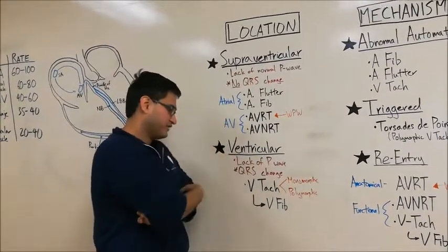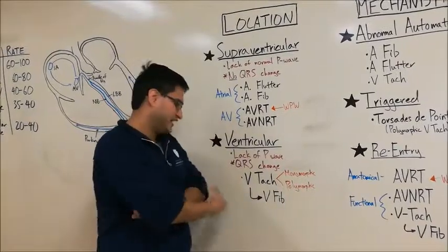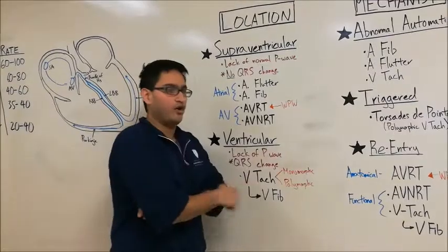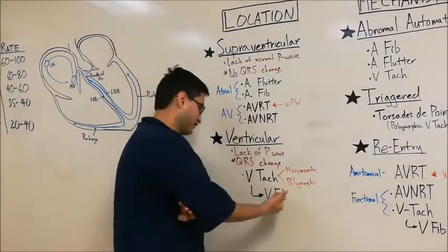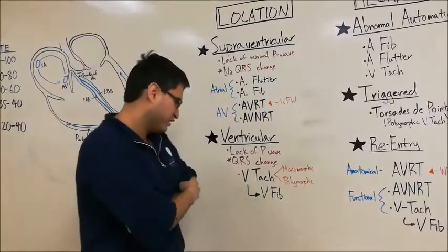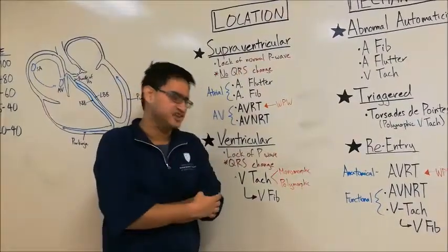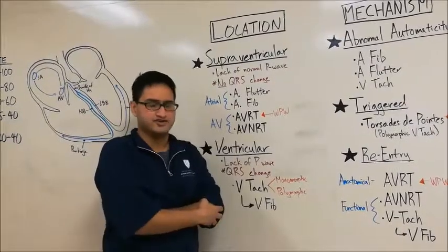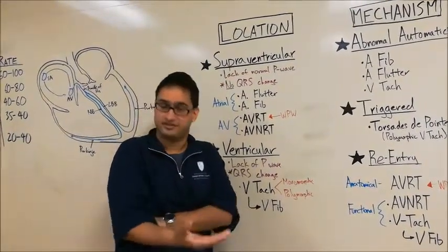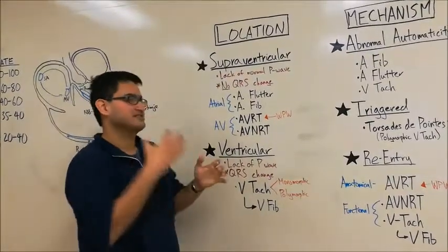For ventricular arrhythmias, the main one we should think about is VTAC, ventricular tachycardia. Now VTAC has both monomorphic forms, where all the waves look the same, and polymorphic forms, where all the waves can vary in how they look. Now what's important to note is that VTAC, if not treated, can degenerate into VFib. And VFib, if not treated, can degenerate into a cardiac arrest, which if not treated will lead to death. So this is how you can categorize them by location.